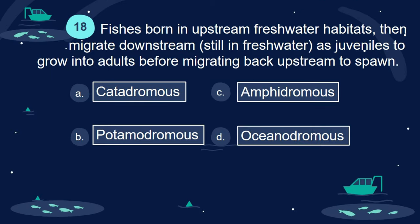Question 18. Fish is born in upstream freshwater habitats, then migrate downstream, still in freshwater, as juveniles to grow into adults before migrating back upstream to spawn. A. Catadromous. B. Potamodromous. C. Amphidromous. D. Oceanodromous.